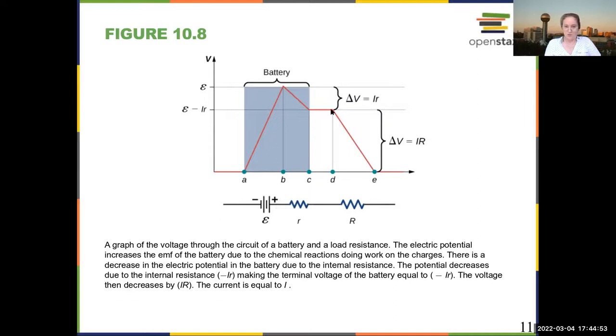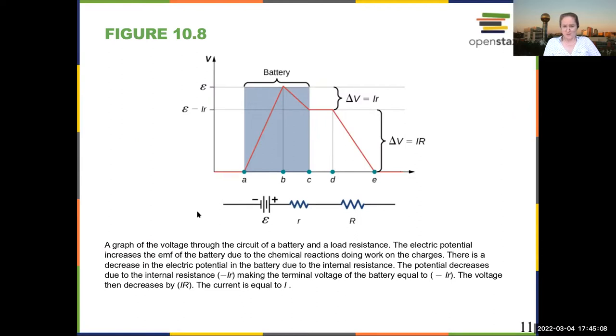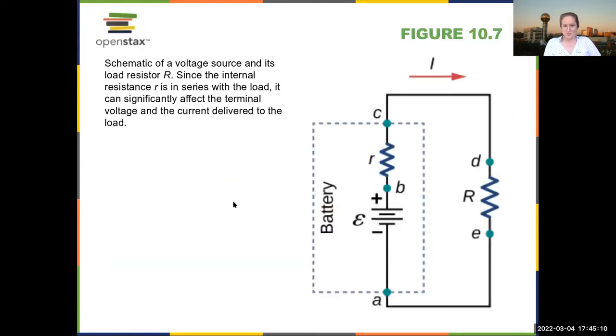Then you go through the resistor, and this is an ohmic device. I can tell that because the slope is constant, so your potential decreases constantly until you get back to the same potential you started at. Because of course, this circuit was actually drawn in a loop.